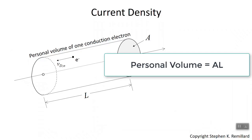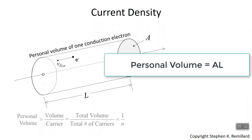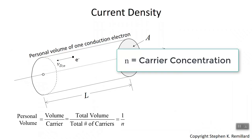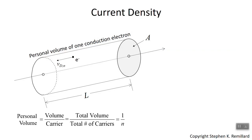Let's look at exactly what the personal volume means as it concerns the carrier density. The volume of one carrier — volume per carrier — is the same as the total volume of the semiconductor divided by the total number of carriers. Number of carriers per unit volume is n, so the total volume per number of carriers is 1 divided by n, the carrier concentration of electrons.